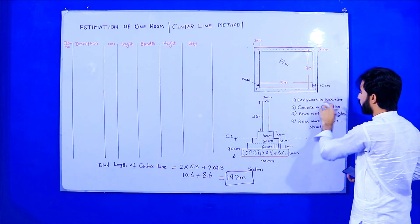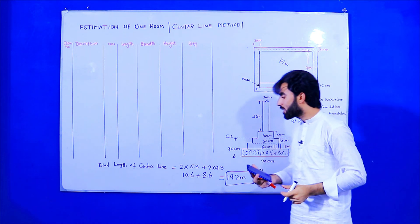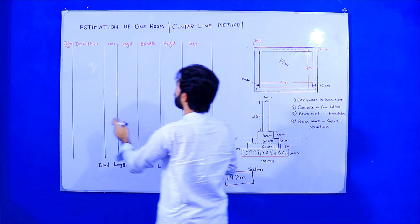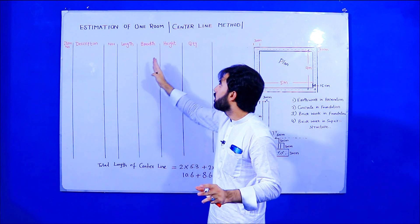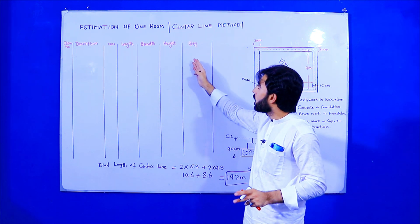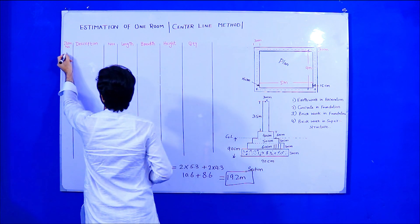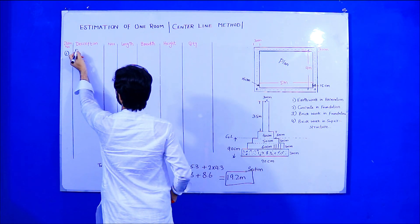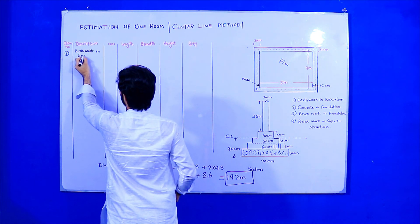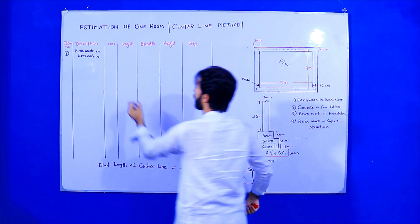Now we will calculate the quantity of earthwork and excavation, concrete and foundation, brickwork and footing, and brickwork and superstructure. Let's start. We will make columns for item number, description, numbers, length, breadth, height, and quantity. Item number one is earthwork and excavation. We have just one number for this room.